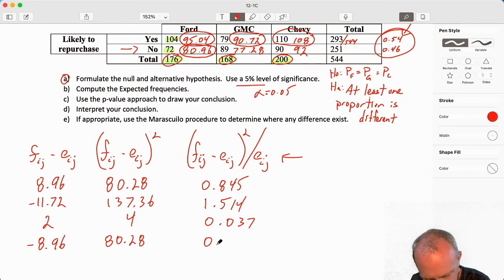This next one, I know that's going to be 11.72 squared is going to be 137.36. But now I'm dividing it by this next expected value, 77.28. 1.777.